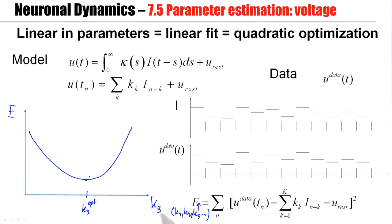Now, since the voltage is linear in the parameters, the square of the voltage is quadratic in the parameters. In particular, it's a quadratic function of k3. Just take this square and multiply it out. And you will have terms of the form u data squared. Then terms of the form u data times k3. And then you will have terms of the form k3 i n minus 3 squared, which means k3 is quadratic. So, this function is quadratic in the parameters. And that means I can directly calculate the optimal value.